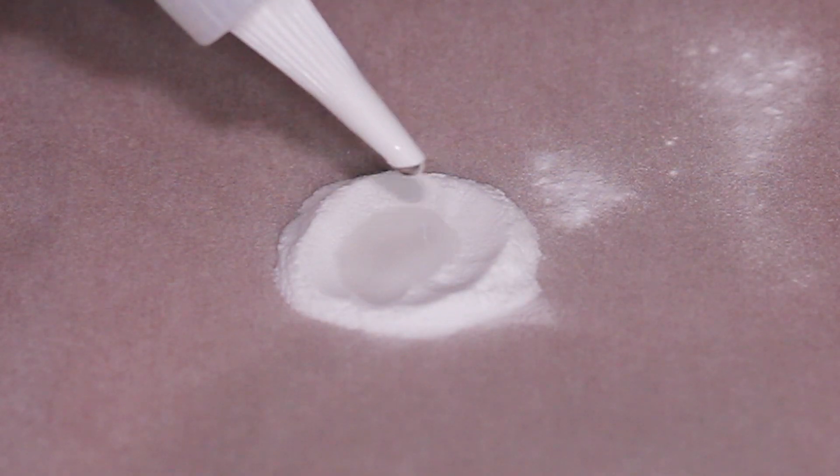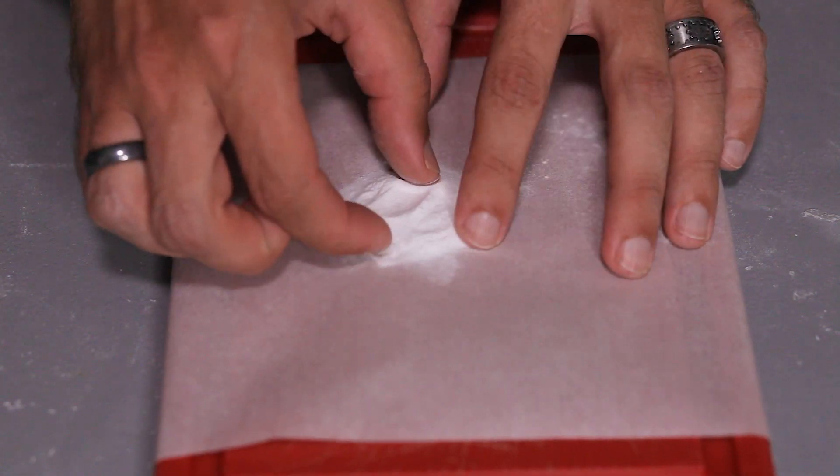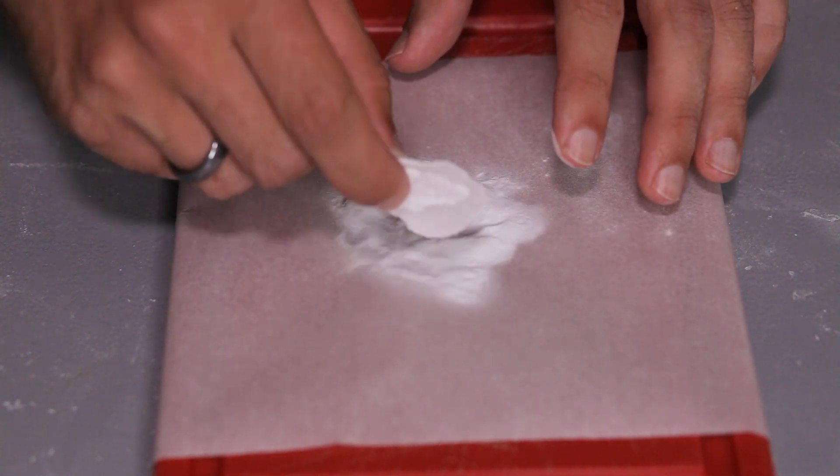Not only will baking soda stop CA glue from being sticky, it will completely cure it almost instantly, basically turning it into a very hard and rigid plastic.